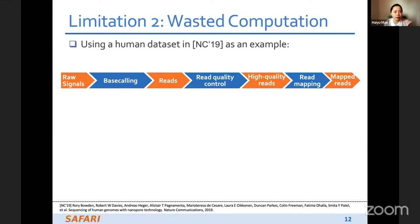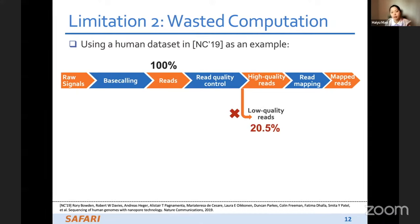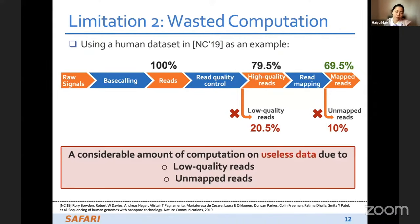The second limitation is wasted computation. Using the same dataset: after base calling we have all the reads, but after read quality control we only have less than 80% of reads as high quality, and after read mapping we only have less than 70% of reads. So there is a considerable amount of computation on useless data due to low quality reads and unmapped reads.